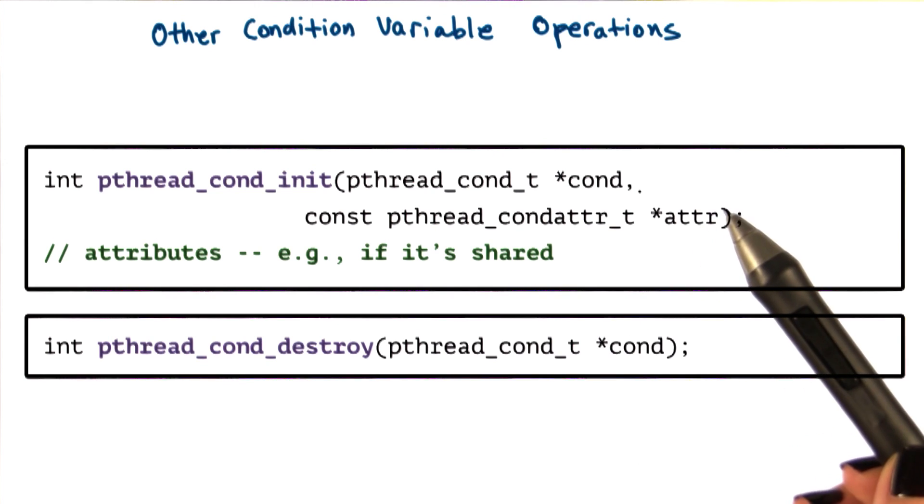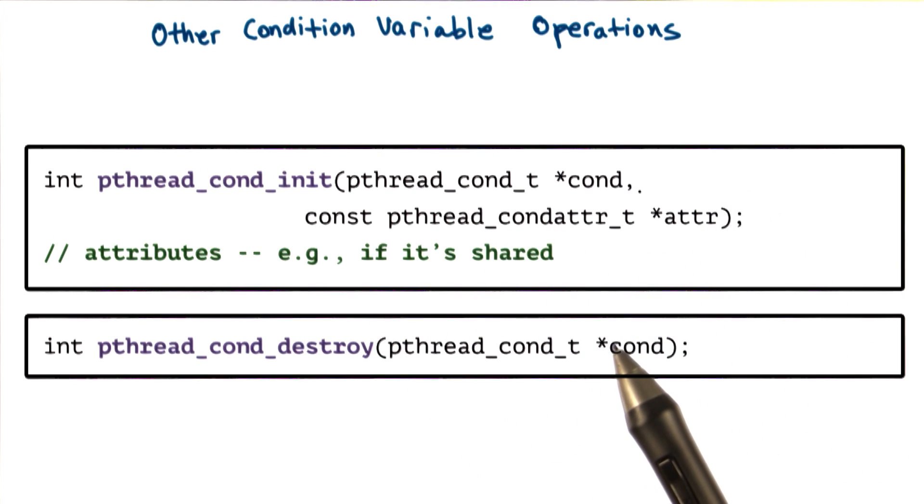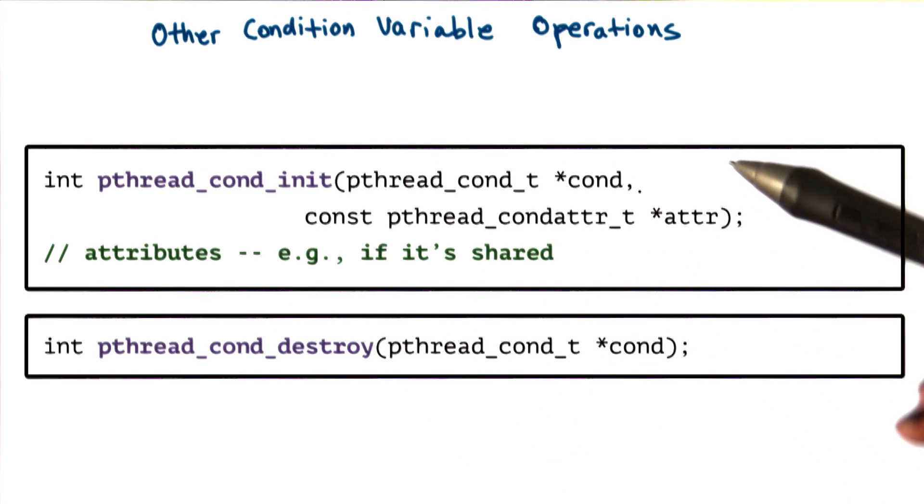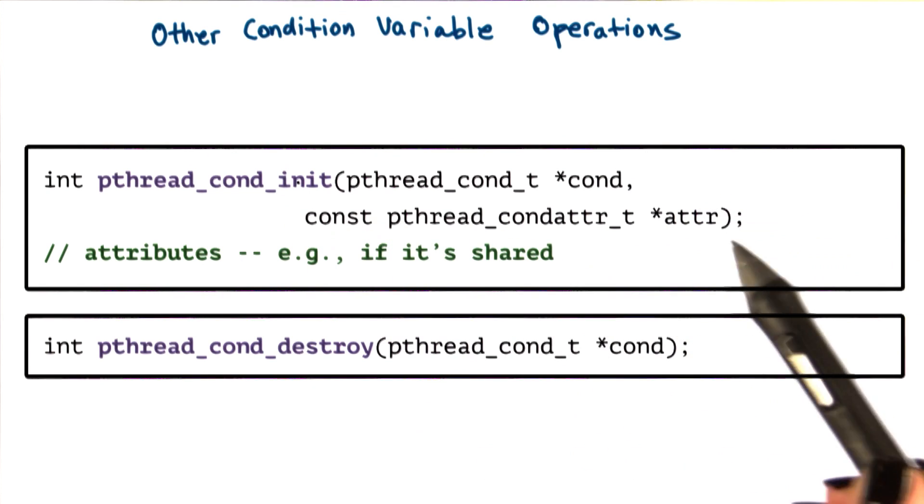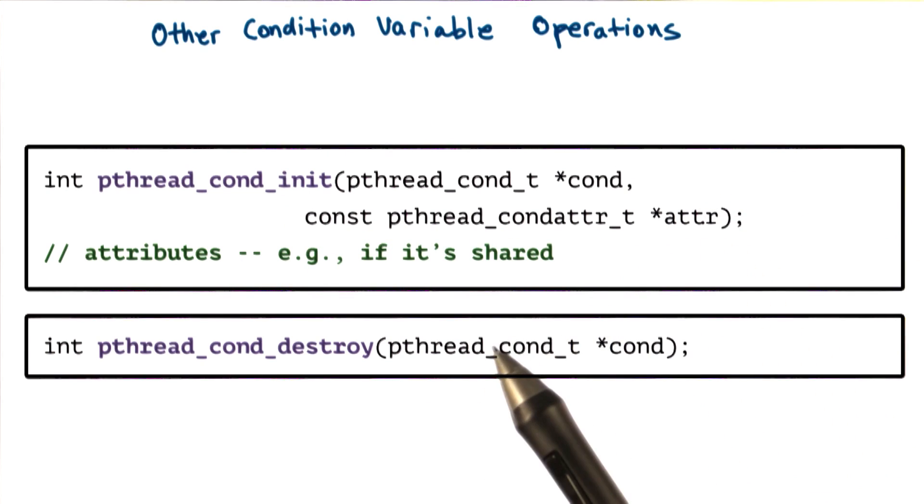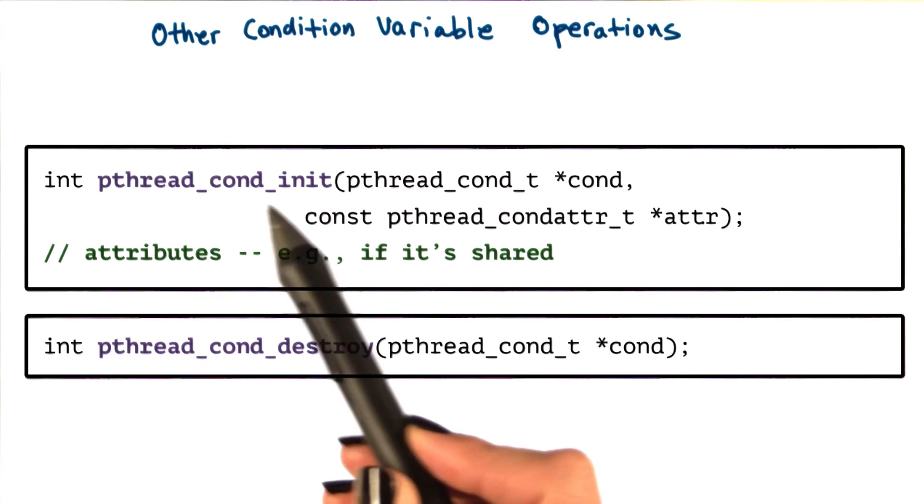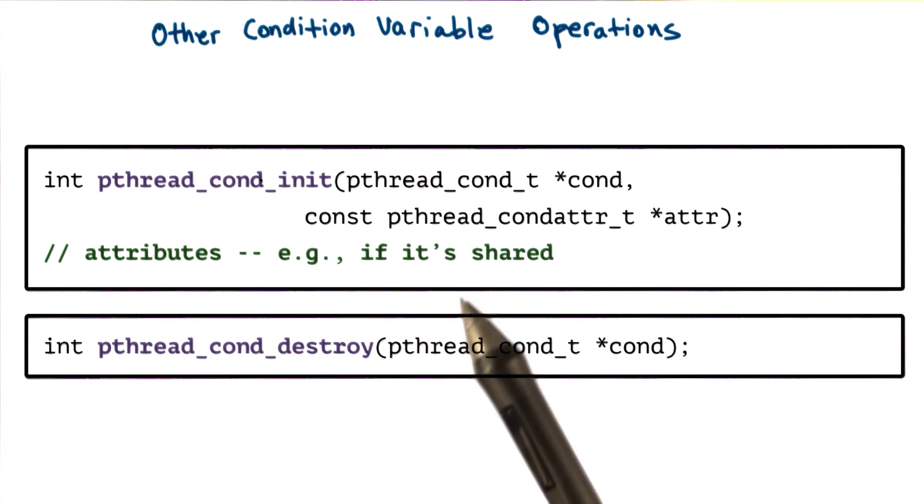And similar to what we saw with the mutex and threads attributes data structures, passing null in this call will result in the default behavior that's supported by pthreads. That happens to be that the condition variable is private to a process.